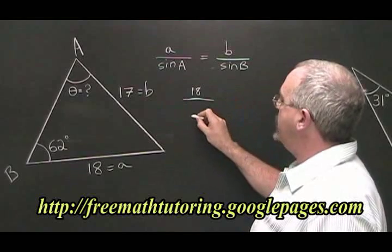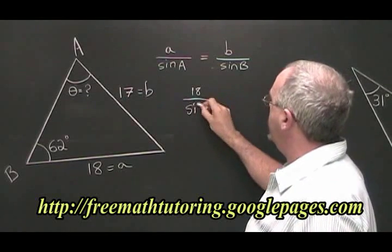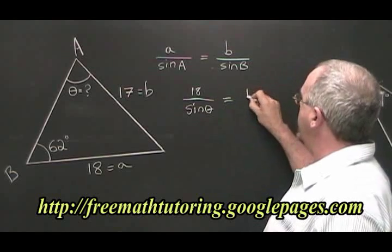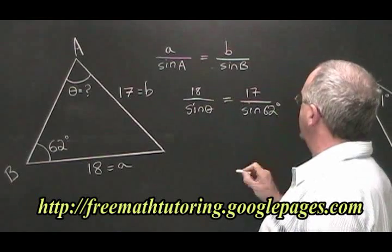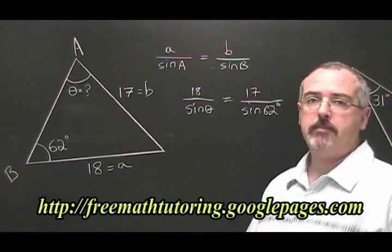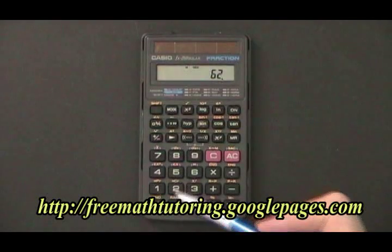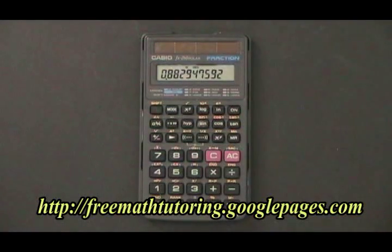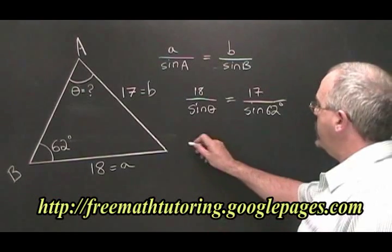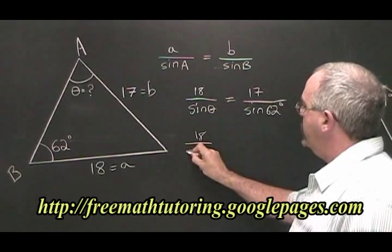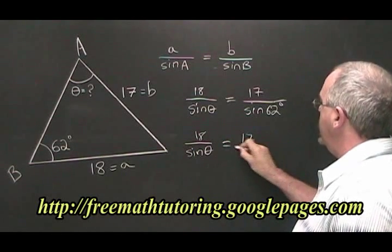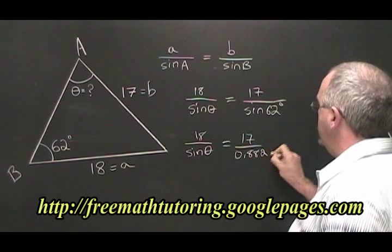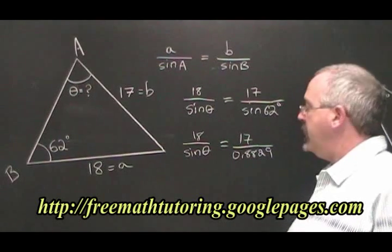18 over sine of unknown theta is equal to 17 over sine of 62 degrees. The sine of 62 degrees is equal to 0.8829. So we can rewrite our formula: 18 over sine of theta is equal to 17 over 0.8829. Cross multiplying...